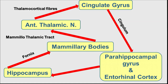In the Cingulate Gyrus, there is a white bundle or myelinated fiber bundle called the Cingulum, which takes all these projections down to the Parahippocampal Gyrus. From the Parahippocampal Gyrus, through the entorhinal cortex, it enters the hippocampus and ends the circuit. Thereby, the circuit which starts from the hippocampus ends at the hippocampus.